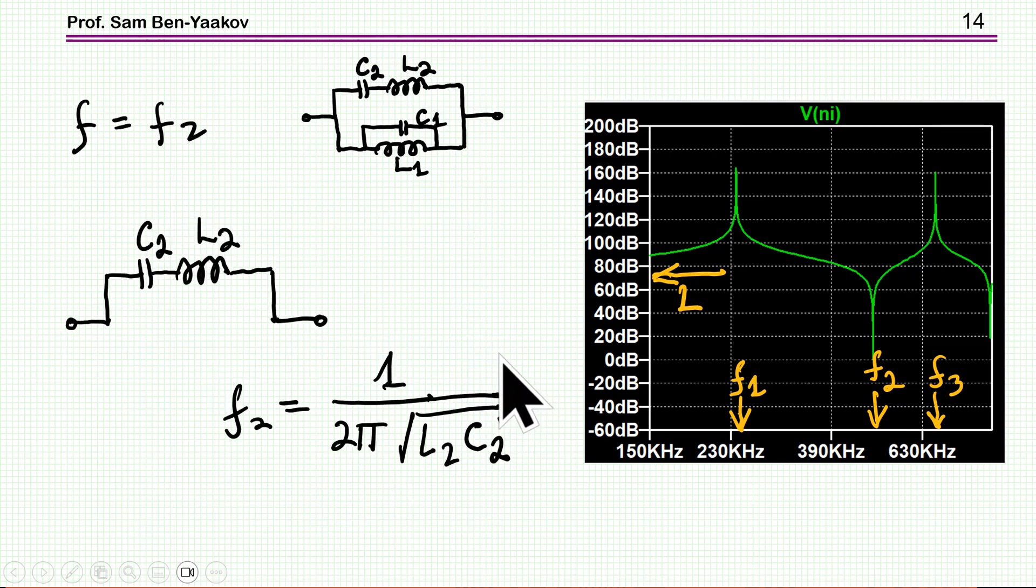Now, we move to the second resonant here. This is a series resonant. So, we have this branch in series resonant. In this case, the impedance here is very low,